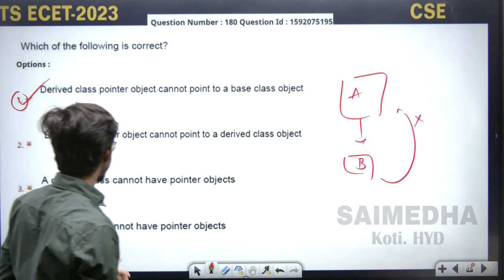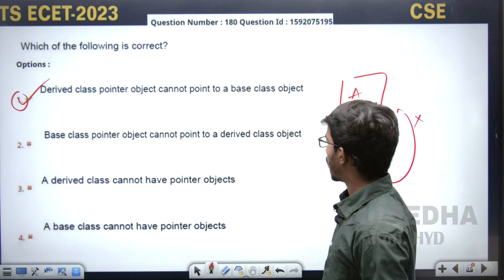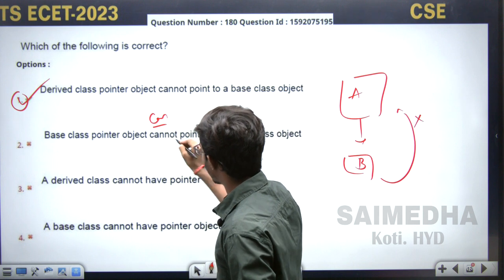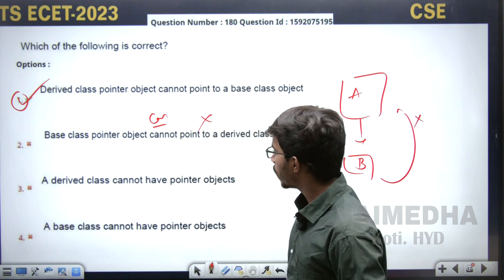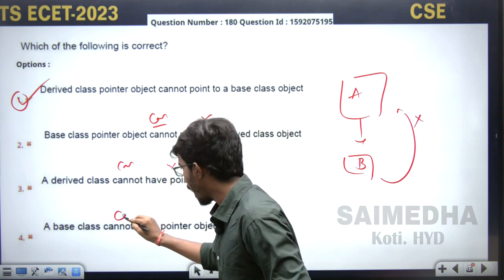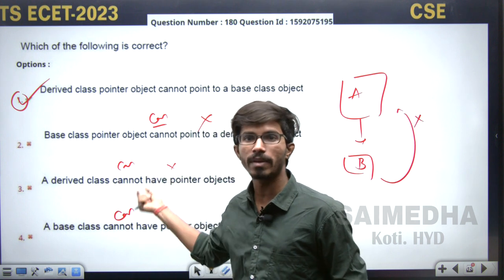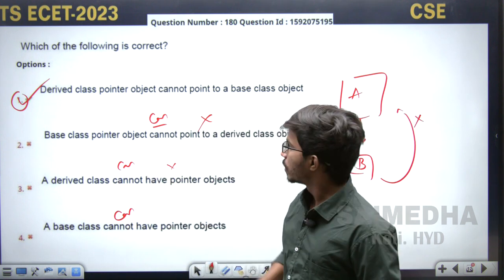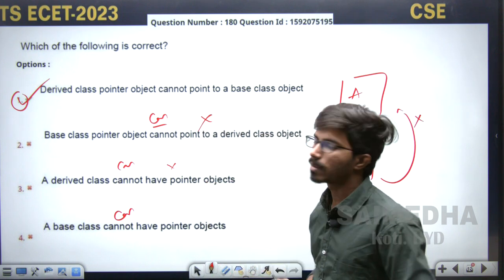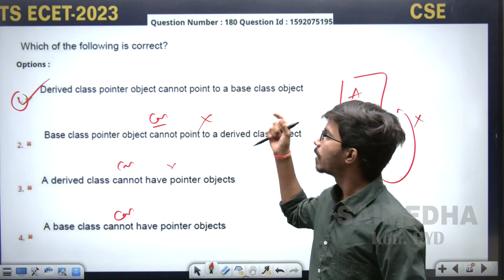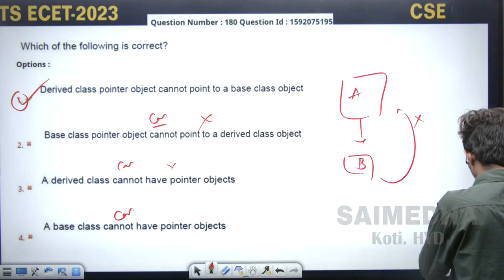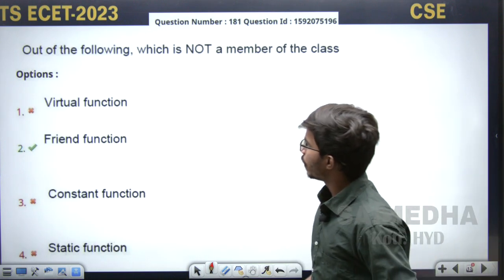Now checking the other options: 'base class pointer cannot point to the derived class object' — this is not right, because it can point. They are saying 'cannot,' so this is not the right option. 'Derived class cannot have a pointer object' — also not right, because it can have a pointer object. So there is a simple difference between 'can' and 'cannot.' The first option is correct: derived class pointer cannot point to the base class object, but base class pointer can point to the derived class object.